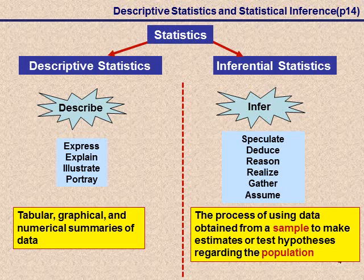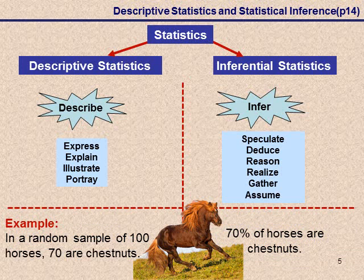So we're using data that we've observed to make assumptions about data we have not yet observed. For example, if we were doing a study on horses and wanted to see what the most common color is — if we took a sample of 100 horses and found that 70 of them were chestnut, we can say that 70% of the horses in our sample were chestnut. Now if we expand that to the population and say 70% of horses are chestnut, then we are making an assumption about animals we haven't yet observed. So that is making an inference.